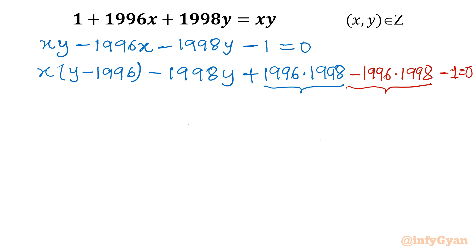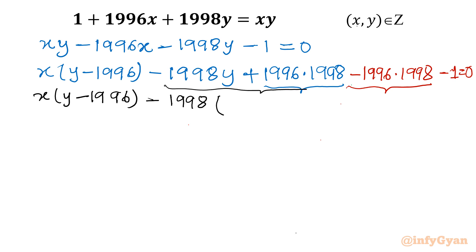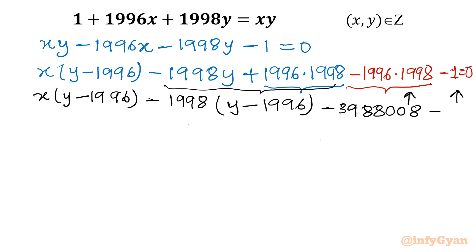Now I can factor out y minus 1996 and take 1998 common from remaining terms to get x minus 1998 in one bracket and y minus 1996 in another. The leftover constant terms combine: taking the product 1996 times 1998 gives 3988008, minus 1 gives the constant 3988009 equal to 0, so the product equals 3988009.